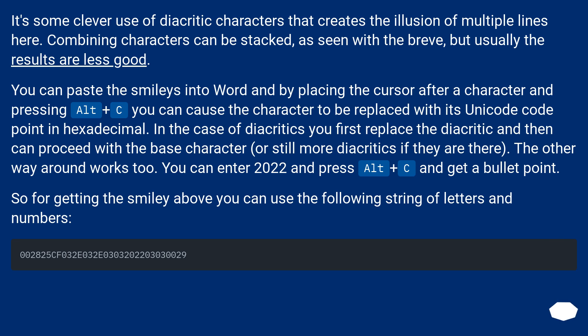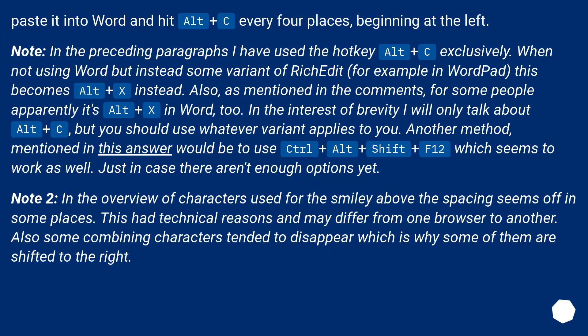In the case of diacritics, you first replace the diacritic and then can proceed with the base character, or still more diacritics if they are there. The other way around works too — you can enter 2022 and press Alt+C and get a bullet point. So for getting the smiley above you can use the following string of letters and numbers. Paste it into Word and hit Alt+C every four places, beginning at the left.